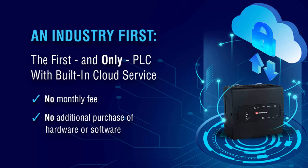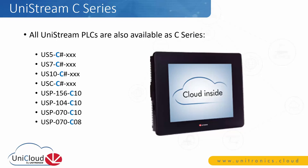This is an industry first: the first and only PLC with built-in cloud service at the time of purchase, with no monthly fee and no additional hardware or software purchase required. You buy the unit and immediately have cloud service. This is called the UniStream C-Series — all UniStream PLCs are available in the C-Series and must be selected prior to purchase. In the part number, replace the B with a C: in the middle for built-in and PLC-only models, and at the end for the modular model.